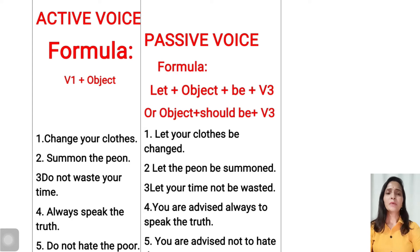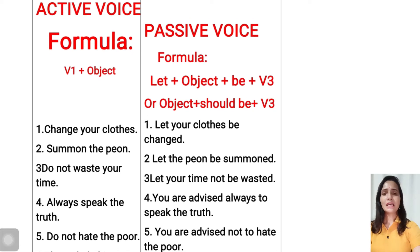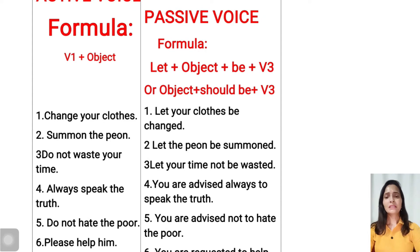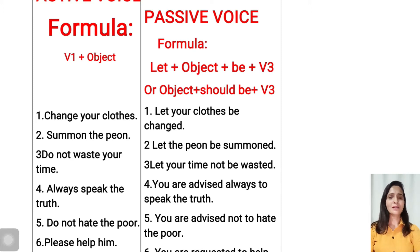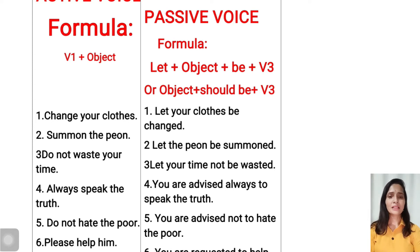The formula of passive voice is: Let + Object + be + Verb 3, or Object + should be + Verb 3. Let's start with the first example: 'Change your clothes' — this is active voice. When we change it into passive voice, we write 'Let' first, then the object 'your clothes', then 'be', then Verb 3 of change, which is 'changed'. So the passive voice is: Let your clothes be changed.